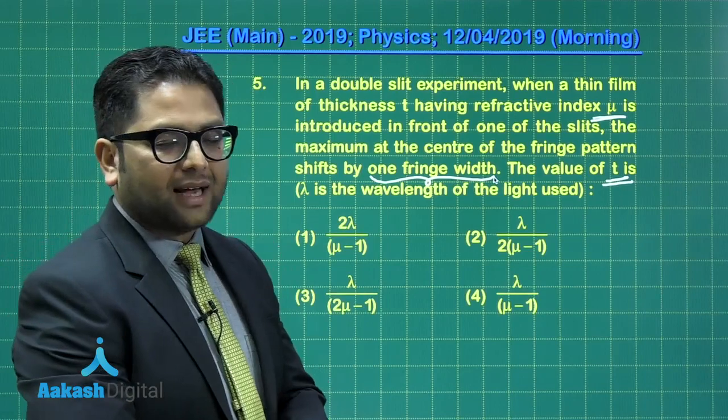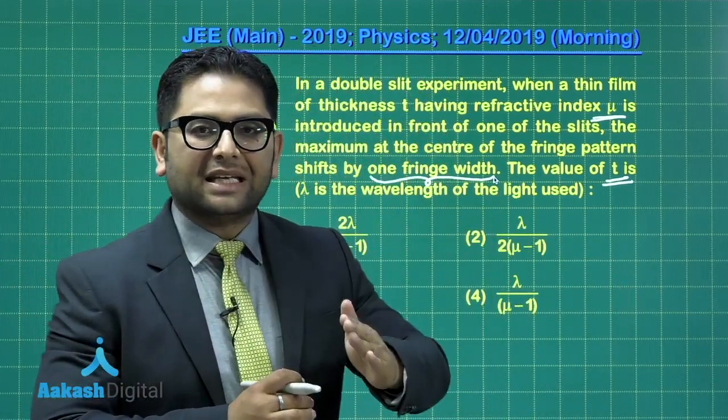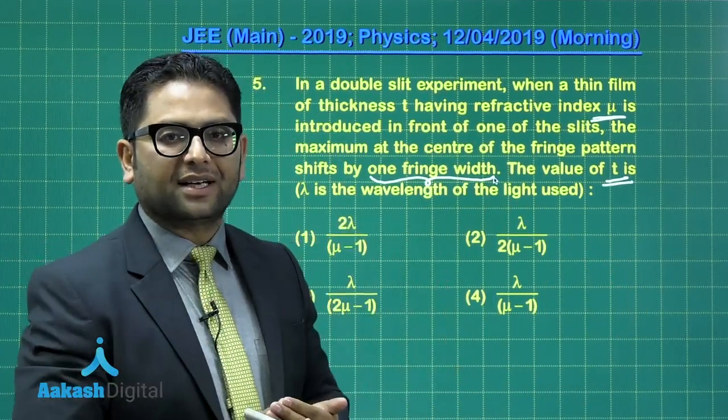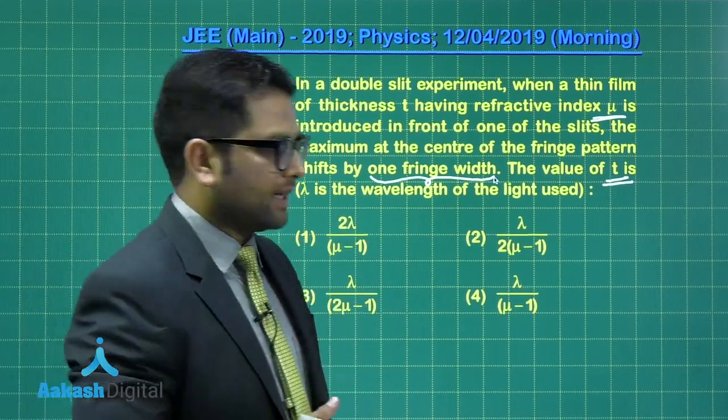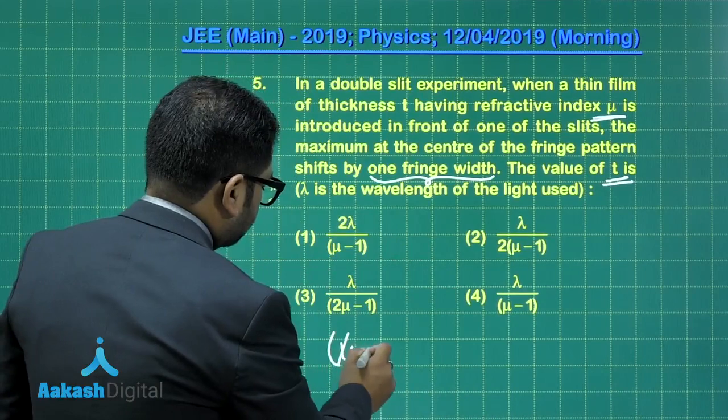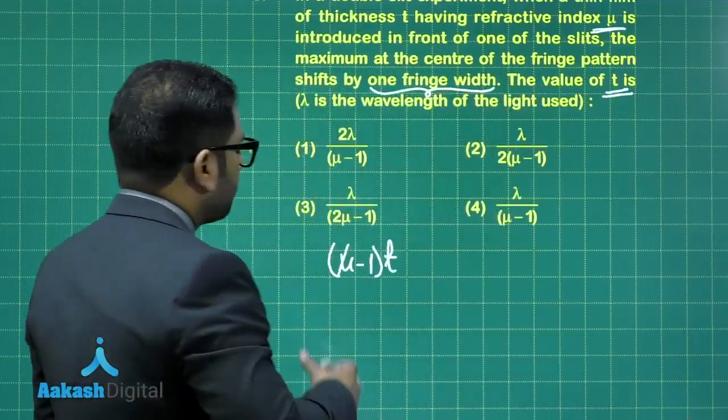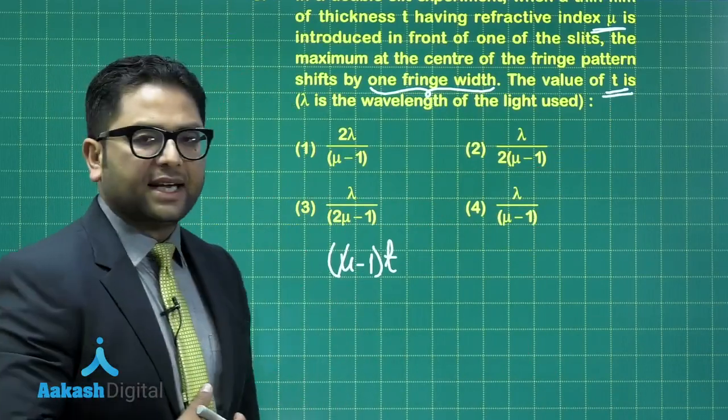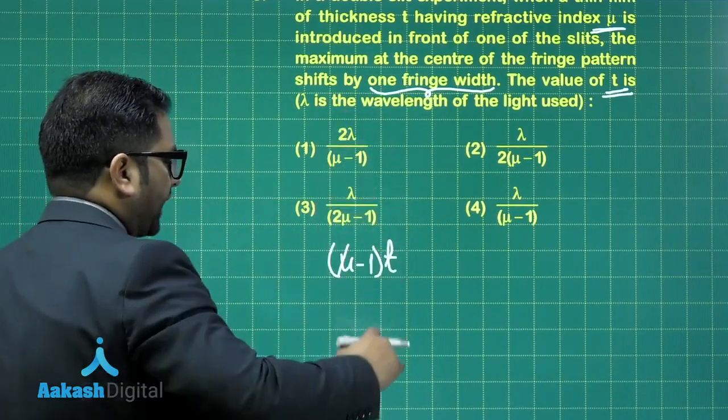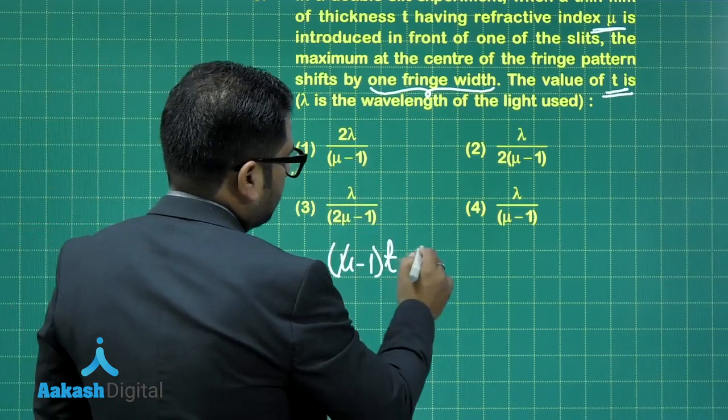Now, you know that upon placement of a slab in front of any of the slits, the additional path difference created would be mu minus 1 multiplied by t. So, mu minus 1 multiplied by t would be the path difference which is created. And you see that if you want to calculate y, that y would be equals to this much multiplied by D by d.